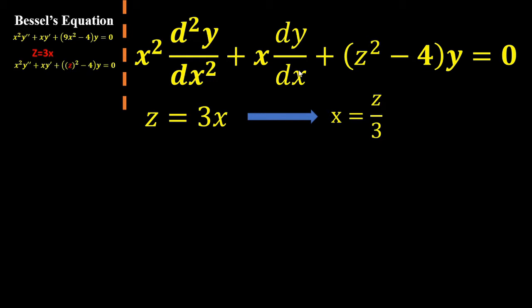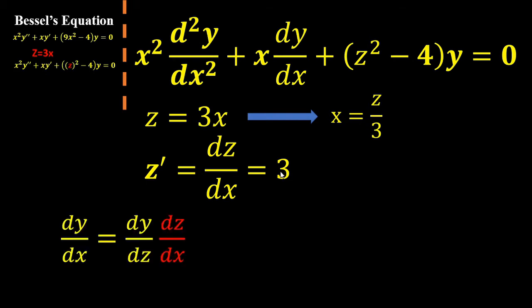First, dy dx. We're going to take the equation that we defined, z equals 3x, and I'm going to take its first derivative right here. z, first derivative with respect to x, will be 3x becomes simply 3.